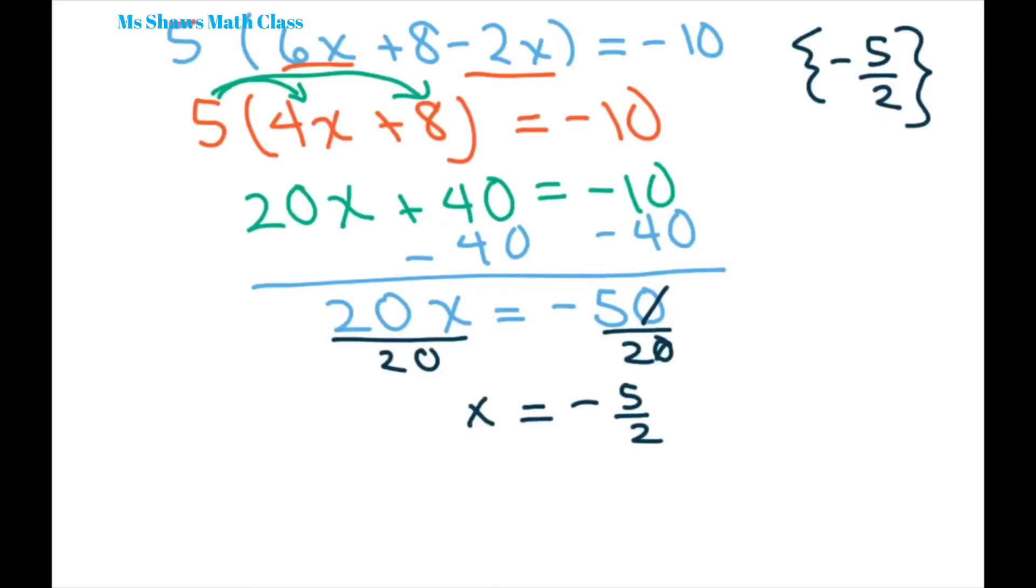Now let's check our solution. So we have five times six. Let's go ahead and use this one just to save some space here. So we're going to use this equation four times negative five halves plus eight equals, does this equal negative 10?